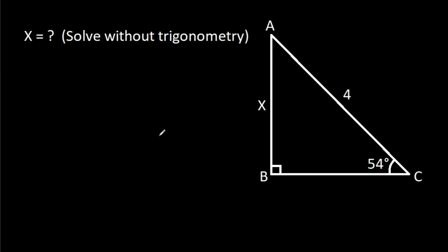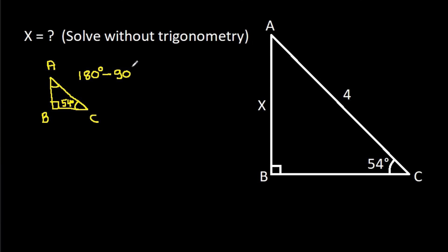In triangle ABC, this angle is 90 degrees and this angle is 54 degrees. So this angle will be 180 degrees minus 90 degrees minus 54 degrees, that will be 36 degrees.